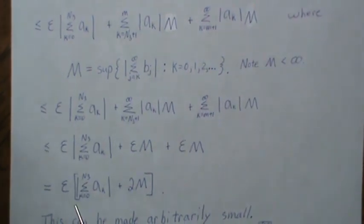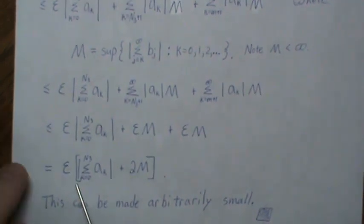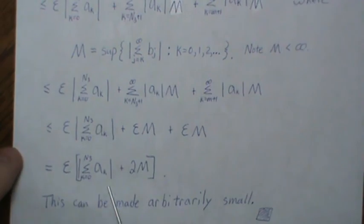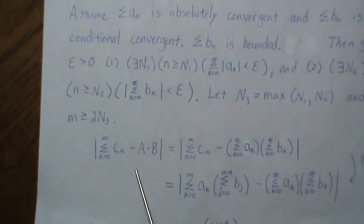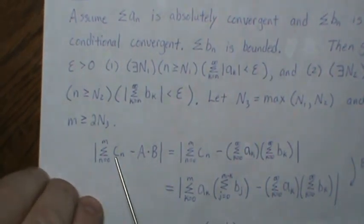So we can make this arbitrarily small just based on epsilon so we can make this approach zero as epsilon goes to zero, which then says our original difference goes to zero, which says that this Cauchy product limits to A times B.